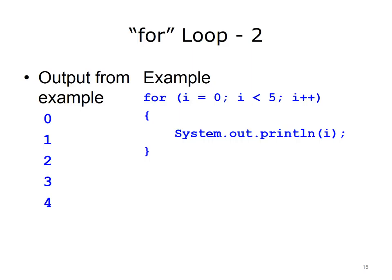Here is the output from the previous FOR loop example. I started at the value 0, and the loop continued while I was less than 5, incrementing by 1 each time. During each iteration, the value of I was output, so the values 0 through 4 were output by the loop.